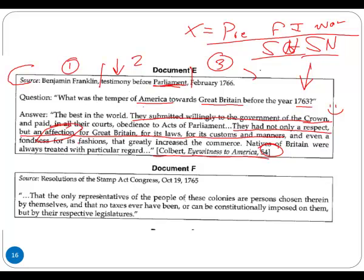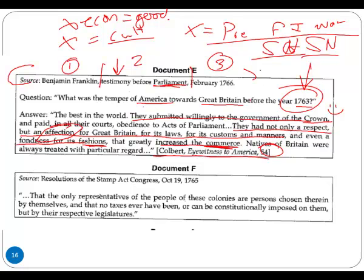Other things to note: the component of culture — fondness for its fashions, greatly increased commerce. Economically, things were good. So many great things are going on in the new world — why change anything? The French and Indian War will do that. Pre-1763, what happens in 1763? The end of the French and Indian War. The Proclamation Line of 1763 is established, and people get miserable.